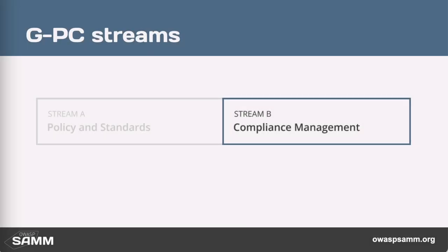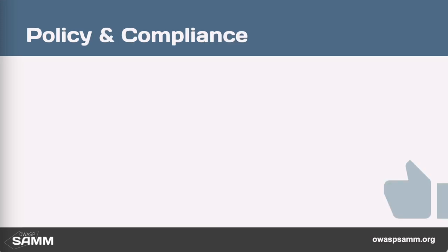In this second stream, compliance management deals with what are our external drivers and how well we understand them. A key aspect of goodness in this stream is to measure non-compliance. Non-compliant teams have to do something about their non-compliance. If you have this huge collection of binders with policies and no real consequences for teams to comply with those policies, then teams are likely to choose simply not to comply with those humongous number of documents.